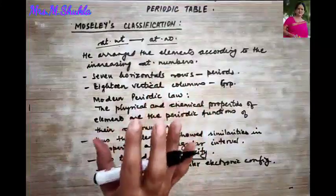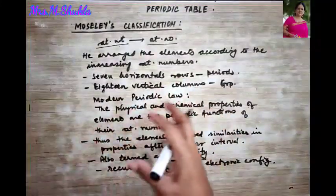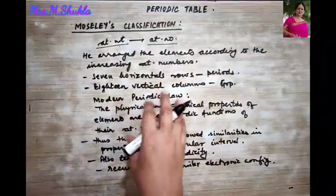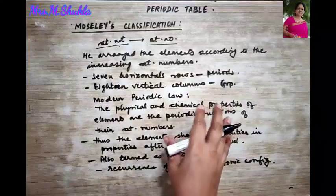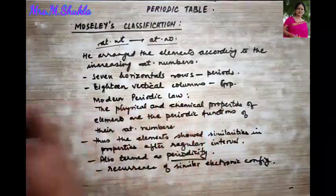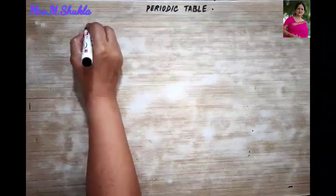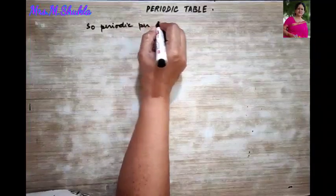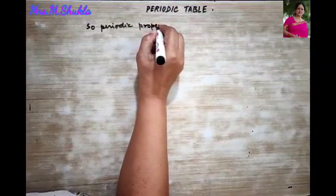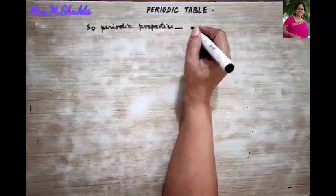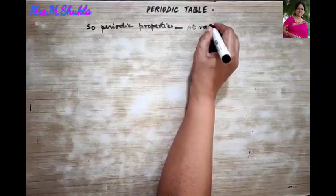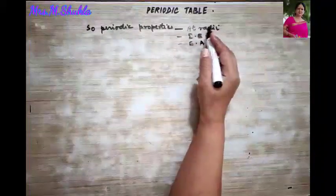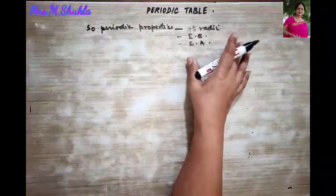Since the properties of elements are dependent on the number as well as the arrangement of electrons, including electrons in the valence shell, elements having similar electronic configuration also have similar properties. Now let us talk about certain periodic properties. The three major periodic properties we need to study in this chapter are atomic radii, ionization energy, and electron affinity.